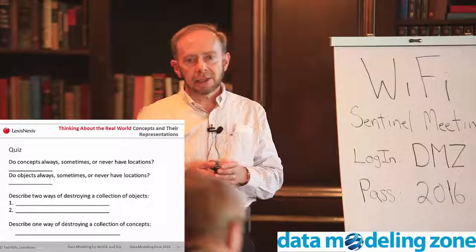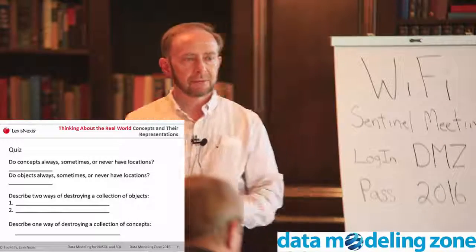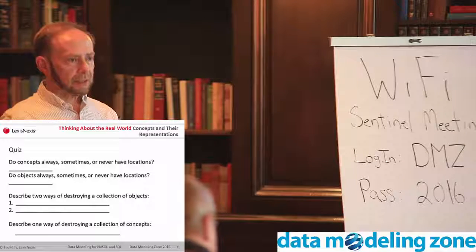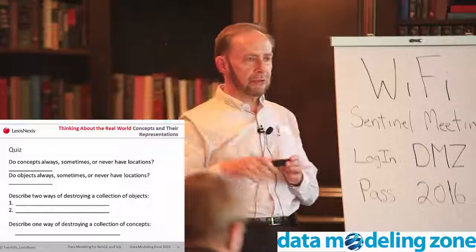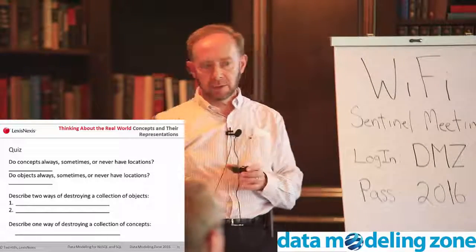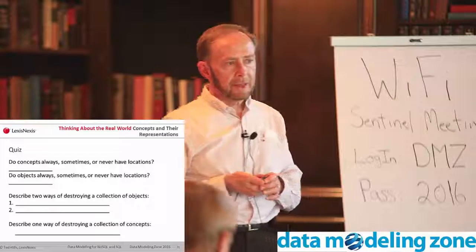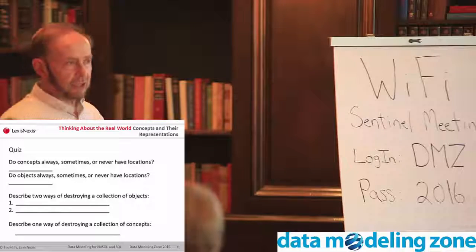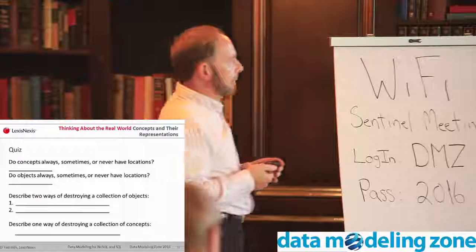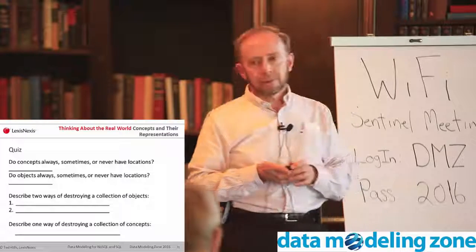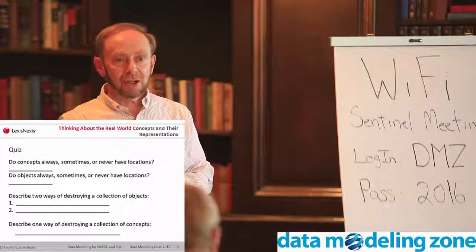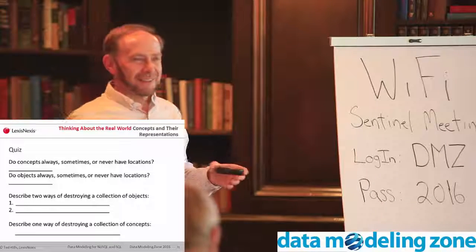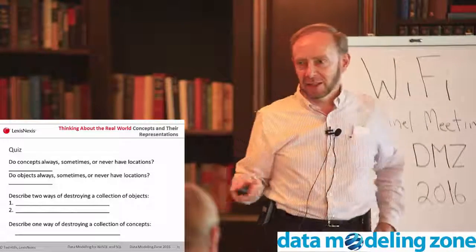Give me two ways of destroying a collection of objects. Think of our dozen eggs — two ways of destroying the collection. Separate them, hand them out — you go home with them. Or physically destroy them. If it's a collection of objects, even though the collection is conceptual, the objects themselves are physical and you can destroy the collection by physically destroying the objects. There's only one way we covered where you can destroy a collection of concepts: forget about it — you just forget about the collection and the collection's gone.